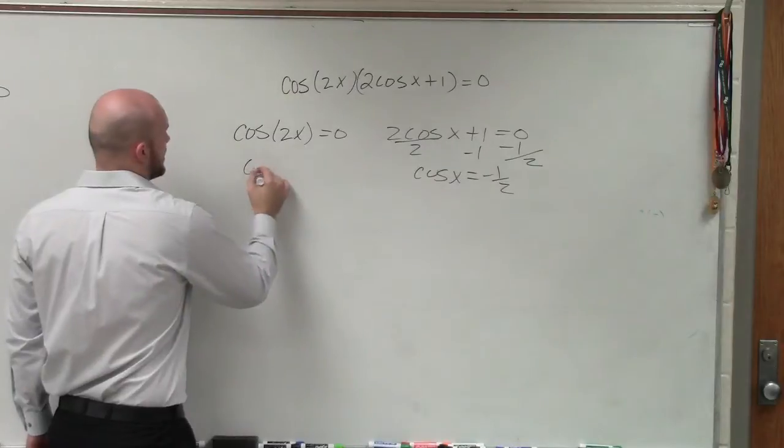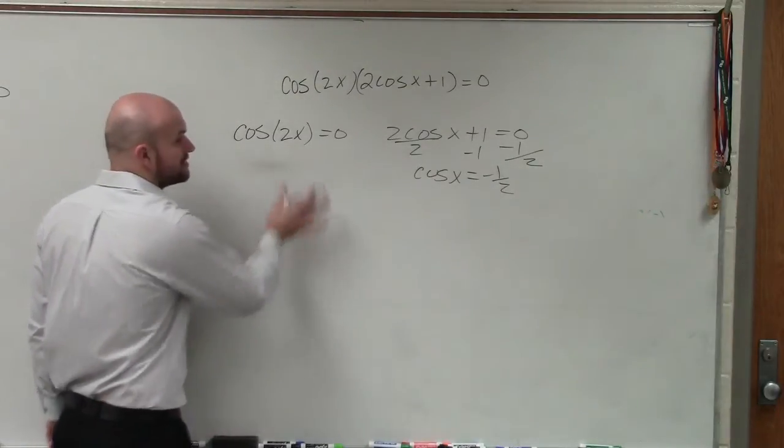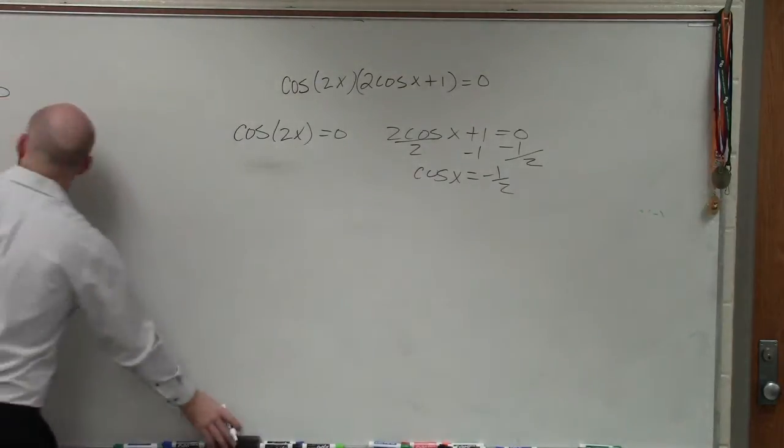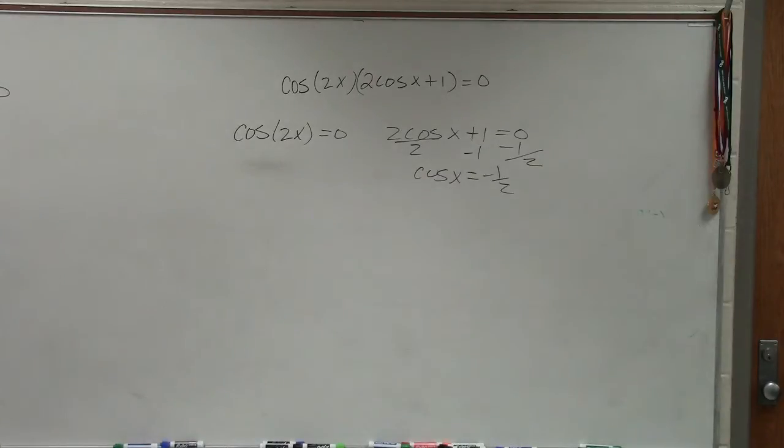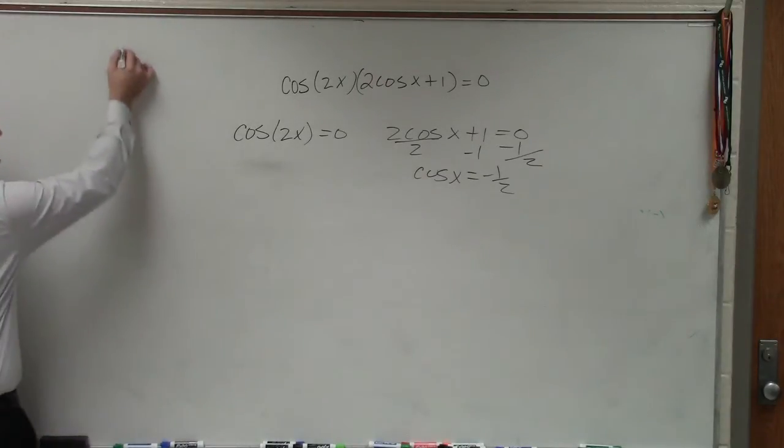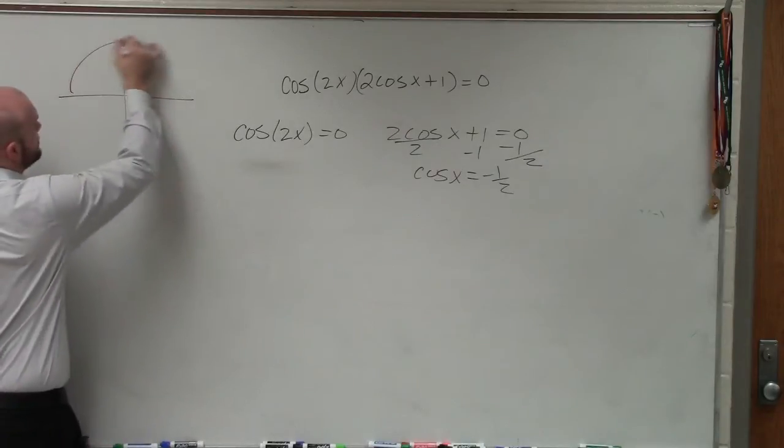So you can say cosine of x equals negative 1 half. And over here, I have cosine of 2x. Well, we already have it equal to 0. So let's go ahead and determine our solutions. So to determine my solutions, I'll go back to my unit circle.